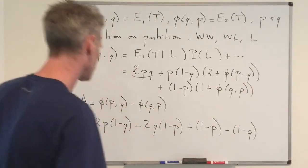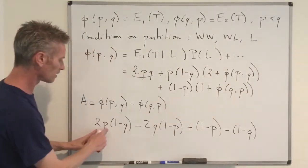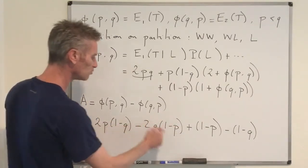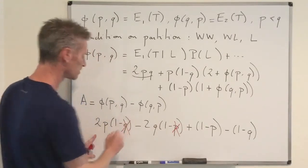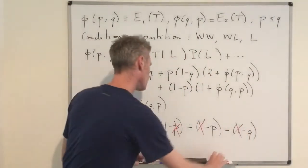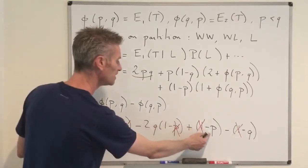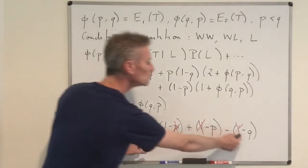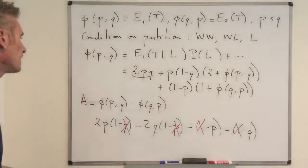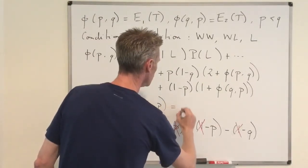Simplifying: 2P·(1-Q) - 2Q·(1-P) = 2P - 2PQ - 2Q + 2PQ = 2P - 2Q. Then (1-P) - (1-Q) = Q - P. So 2P - 2Q + Q - P = P - Q. So after ignoring the 2PQ terms that cancel, the constant term is exactly P - Q.